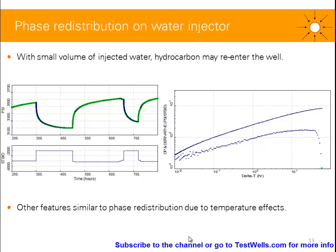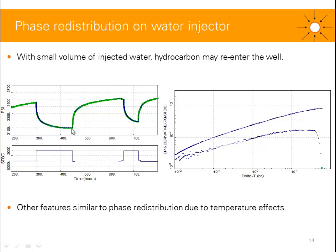Sometimes we may see phase redistribution on water injectors, especially if you've got a water injection well in a hydrocarbon region. With some small volume of injected water, hydrocarbon may re-enter the well. During shut-in — with this PFO for example — you might see a pressure that stabilizes or even goes up as hydrocarbon and gas enter the well. That would be translated by a drop in the derivative. This information could be used to start or stop injection of glycol in the well to try to avoid hydrate formation.